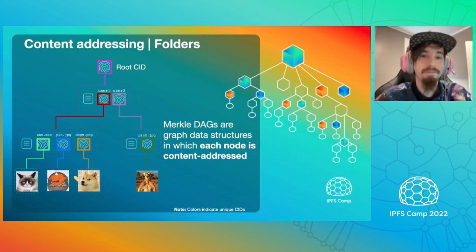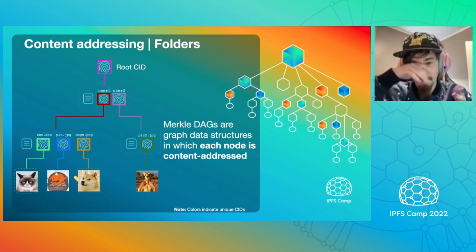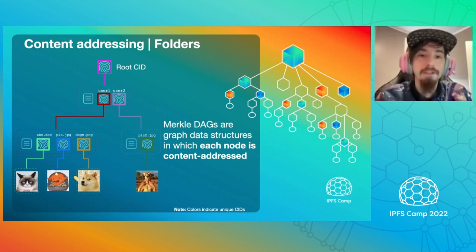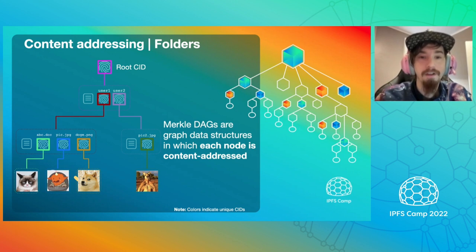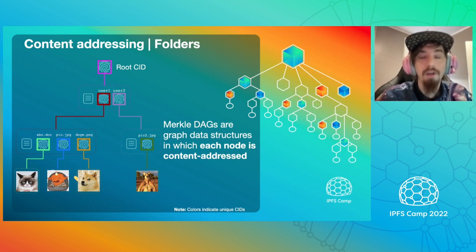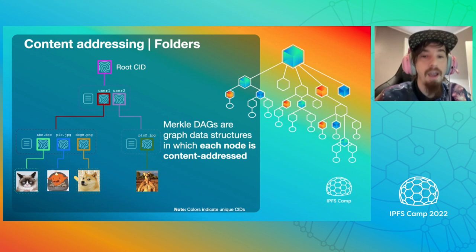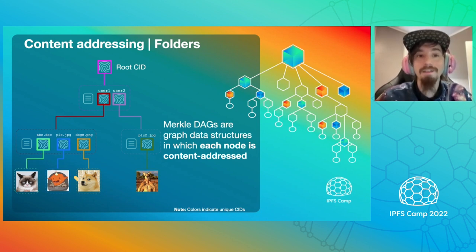This means that we can represent a folder or even a full file system using a content address structure. As you see here on the left side, our top-level folder has a root content ID, has two entries corresponding to two folders, and those folders have other entries corresponding to files. Each entry has a different fingerprint — that's visualized with the colors here. This content-addressed type of graph is what we call Merkle DAGs, also known as Directed Acyclic Graphs. These Merkle DAGs, used by IPFS, allow us to move from location-based addressing to content-addressing in a single step. We're just replacing locations with the root CID of their content. The subpaths stay the same.